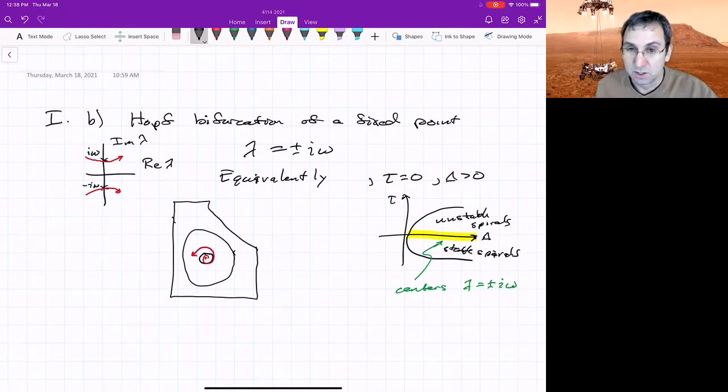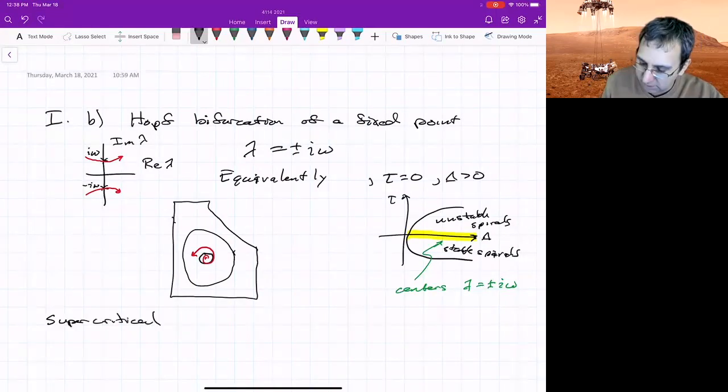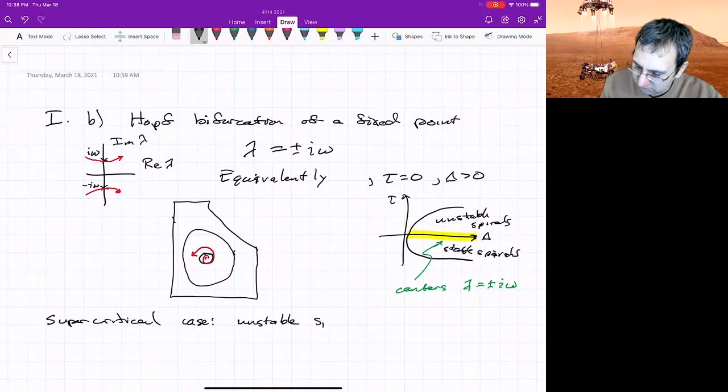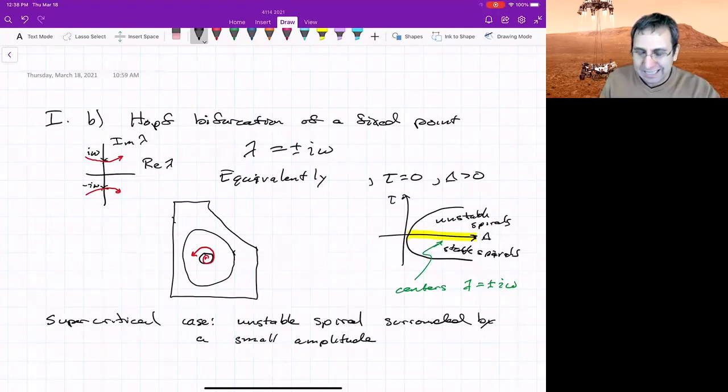In general, when you have a Hopf bifurcation, there's two different types, just like two different types of pitchfork. There's supercritical and subcritical. We'll focus first on the supercritical case.